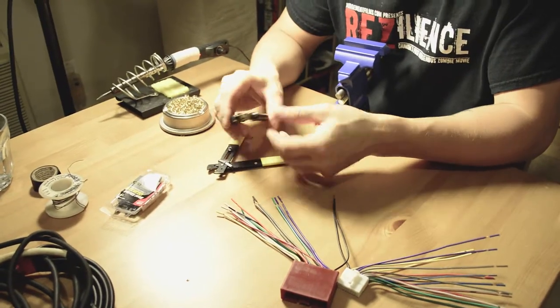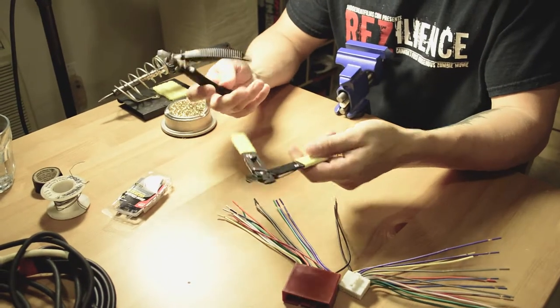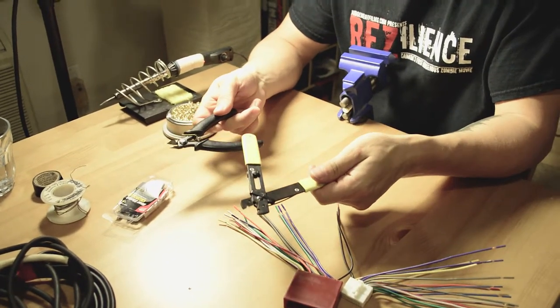These are flush cutters. They're used to cut wires off clean. Both of these run for about $15 to $20. Very handy to have in your kit.